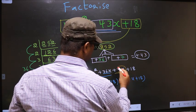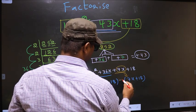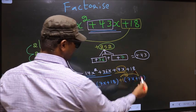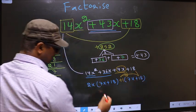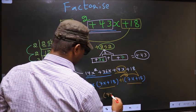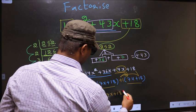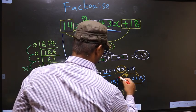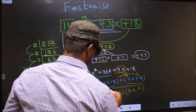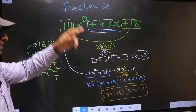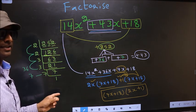Now, from this, 7x has gone inside. So, outside you get +1. Even if you multiply and see, still you get the same thing. Now, you take out 7x + 18 common. So, here you have 2x and here you have +1. So, this is our answer. Am I clear?